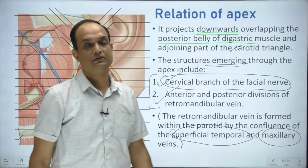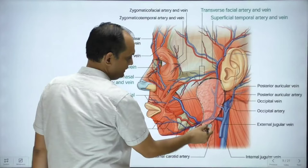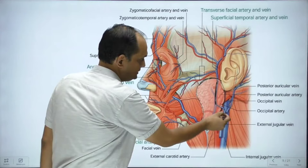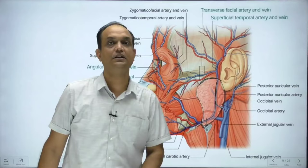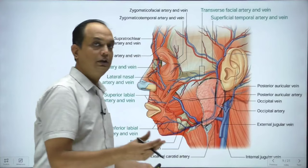In the diagram, you can see the superior surface, anterior border, posterior border, and the apex projecting downward reaching into the upper part of the carotid triangle. You can see the shadow of the retromandibular vein dividing into two parts. The retromandibular vein is present in the substance of the parotid gland, so when you cut the parotid gland, you are able to appreciate the vein inside the gland.